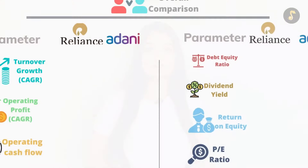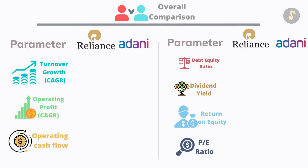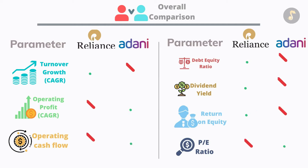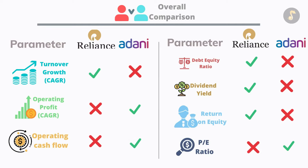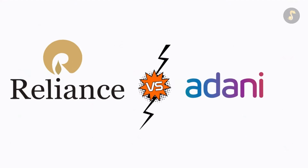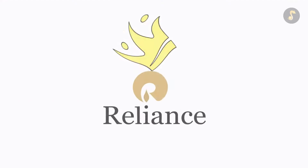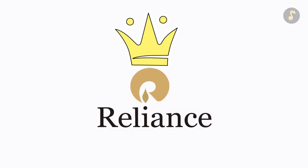Now let's look at the overall performance under these seven parameters. On an overall basis, Reliance Industries is better than Adani Enterprises in four out of seven parameters, making it a better performer. So in this Reliance Industries vs. Adani Enterprises series, the winner is Reliance Industries.